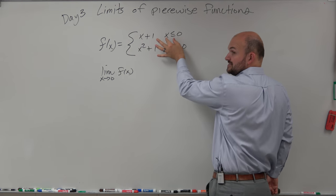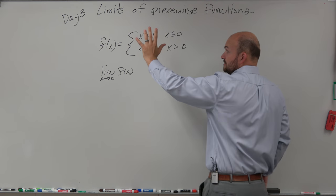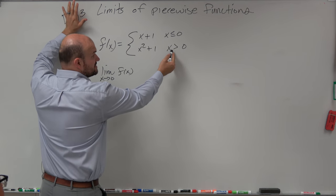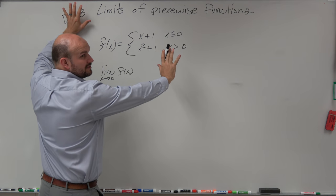This function is for all values that are less than 0, so that's going to be your left-hand limit. And this function is for all values that are greater than 0, so that's going to be your right-hand limit. Would you guys agree with me?